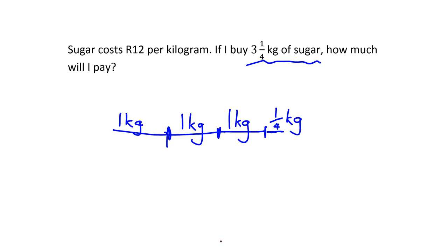Now for each of those kilograms, I'm going to pay 12 rand. That's what that per means. I'm going to pay 12 rand for each kilogram. So for the first kilogram, I'll pay 12 rand. For the second one, I'll pay 12 rand. For the third one, I'll pay 12 rand. And now for this little bit here at the end, well, I've only got a quarter of a kilogram. So I'm obviously not going to pay 12 rand for it. I'm going to pay a quarter of 12 rand for it. So what I'll pay is a quarter of 12 rand.